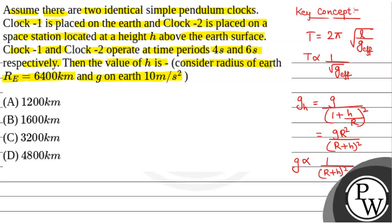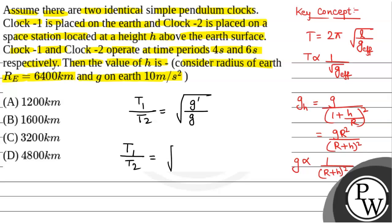So we will find T1/T2, which is equal to √(g_dash / g), where g_dash is the acceleration due to gravity at height h. T1/T2 will equal √(r² / (r + h)²).